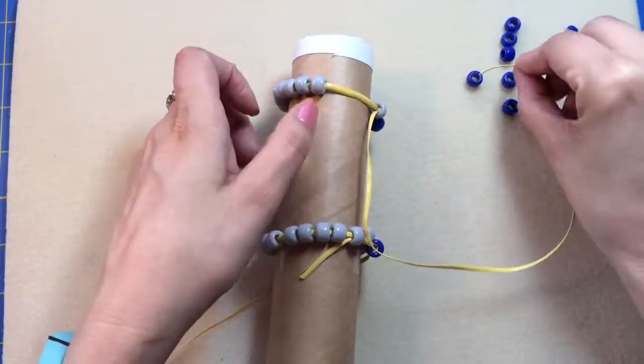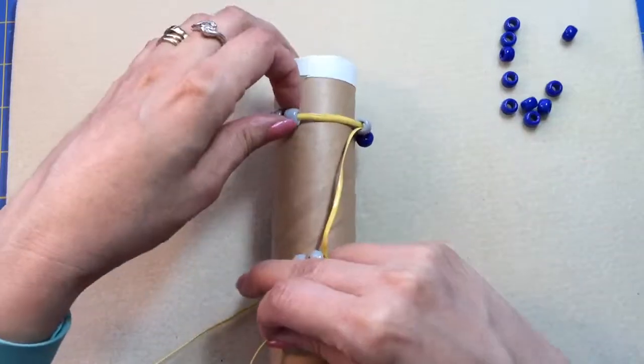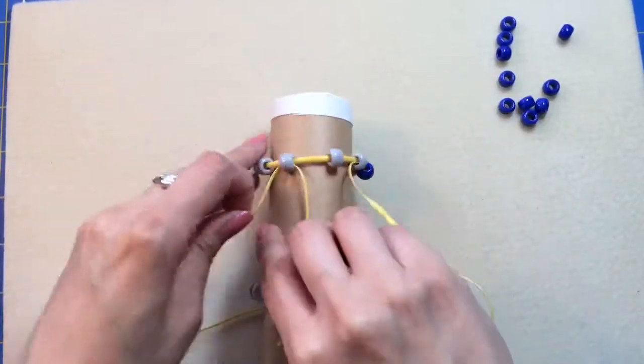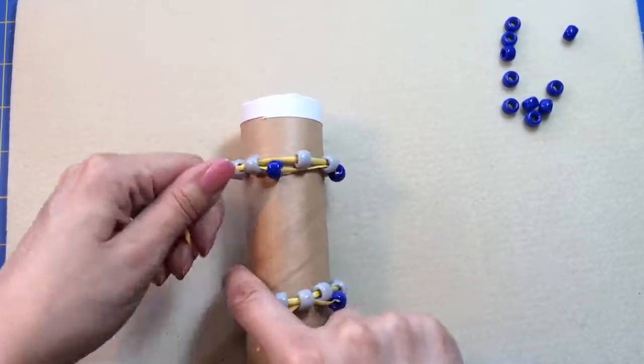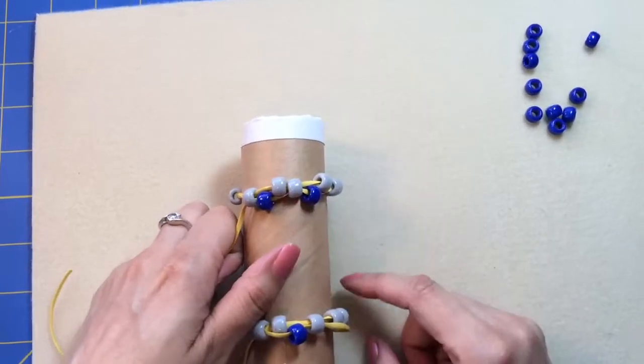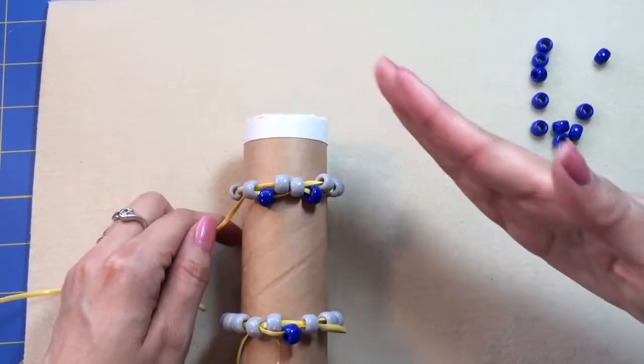And I go this top one. So when I do my skip a bead, my thread goes underneath the bead that I skipped. So there's my bead I skipped, and then that creates my drop going at an angle this way.